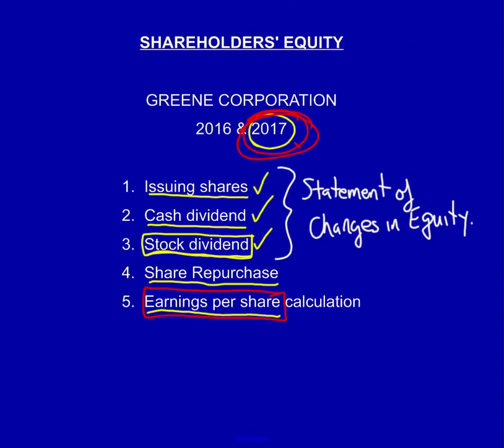In this series of videos, we learned how to record the issue of shares, both for cash as well as for an asset. We learned the entries for a cash dividend as well as the entries for a stock dividend. Finally, we learned how to record the share repurchase using contributed surplus. We also learned how to calculate the basic earnings per share. Thank you very much for joining me in these videos.